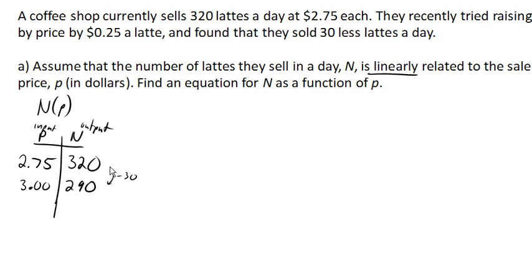What I have here is two input and output pairs, and that's going to let me find a linear equation. A linear equation looks like mx plus b. In this case it'd be mp plus b, because P is our input, where m is the slope and b is the initial value or intercept.